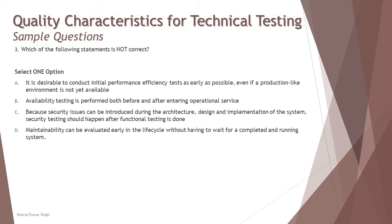Question number 3: Which of the following statements is NOT correct? Option A: It is desirable to conduct initial performance efficiency tests as early as possible, even if a production-like environment is not yet available. Yes — some testing, such as compatibility testing, can begin even if the real environment is not yet available. Option B: Availability testing is performed both before and after entering operation services. Again, many non-functional parameters can be tested before the real environment is available.